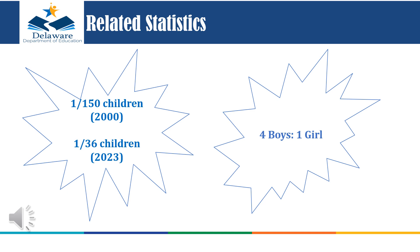So how common is autism? The statistics of the prevalence of autism are displayed on this slide. The rate of children diagnosed with ASD has significantly risen over the past two decades. It is also important to note that the ratio identifies boys 4 to 1 over girls.